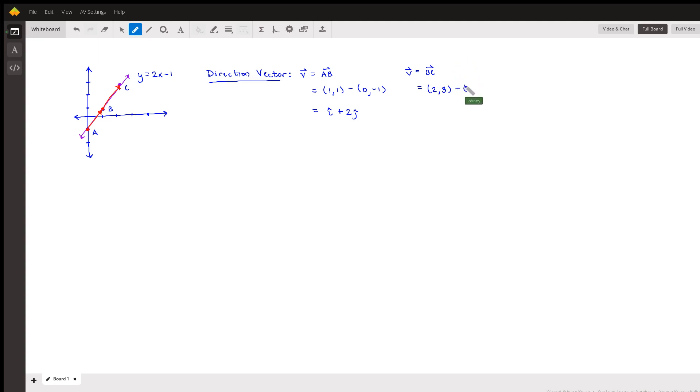which in this case is b, that would be 1, 1. X component with x component, that would give me 2 minus 1, which is 1, i hat. Then 3 minus 1 would be 2, j hat.